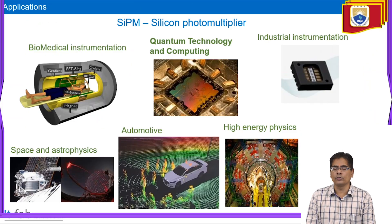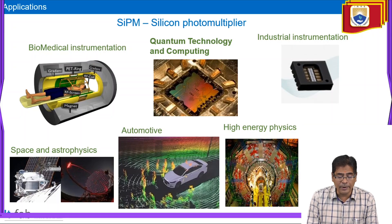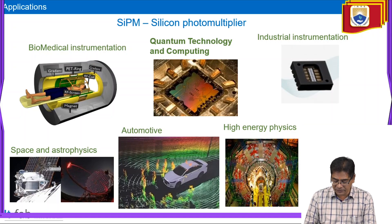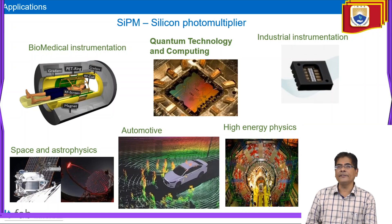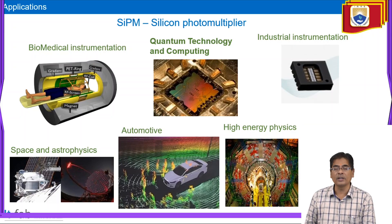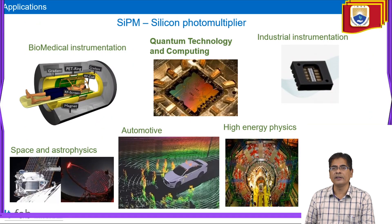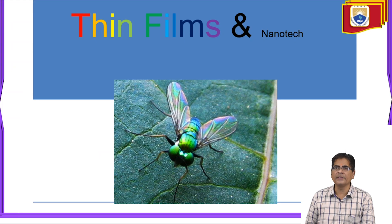In case of silicon photomultiplier (SIPM), applications include biomedical instrumentation, quantum technology and quantum computing, industrial instrumentation, high energy physics, automation, space, and astrophysics. Near ultraviolet SIPM is one example of this technology.